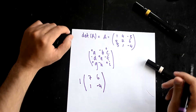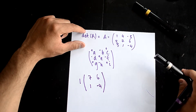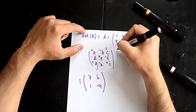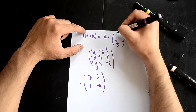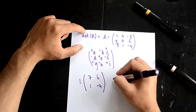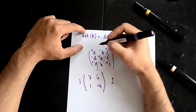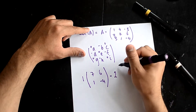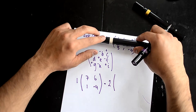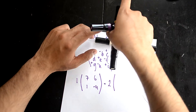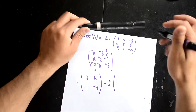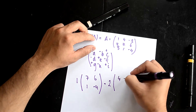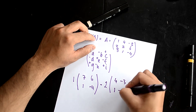Going down to the next element, I'm now on the number 2. But because of the sign matrix, it turns into minus 2. Then using the same principle, you cover the corresponding row and column. The remaining 2x2 matrix gives you: 4, minus 3, 1, minus 4.